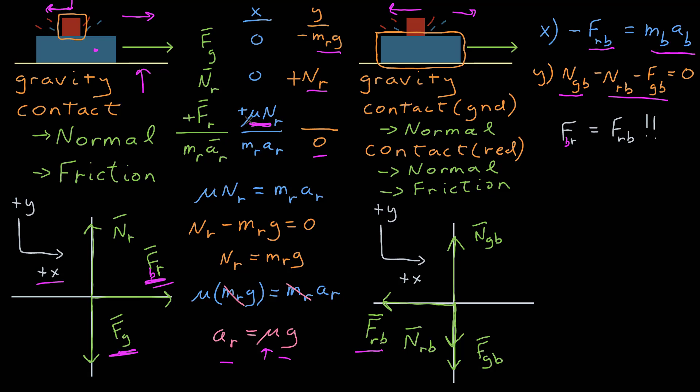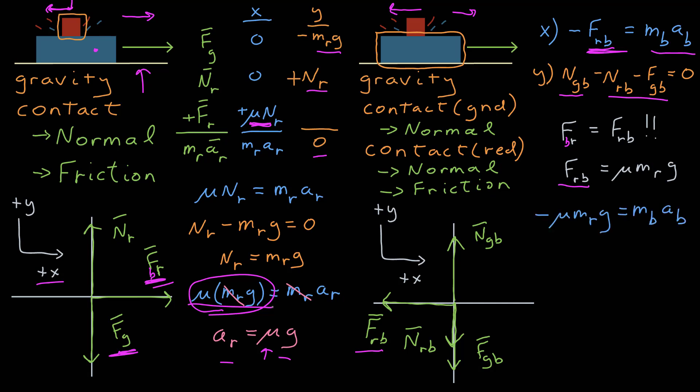That frictional force of blue on red was equal to mu times the normal force of blue on red, which I solved for earlier. The force of red on blue is equal to the frictional force of blue on red, which is equal to mu times the mass of red times g. Substituting that into the blue equation, I now have this expression, and I want to solve for the acceleration of blue.